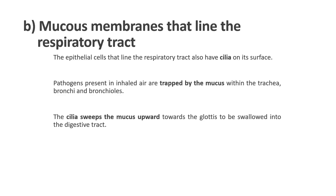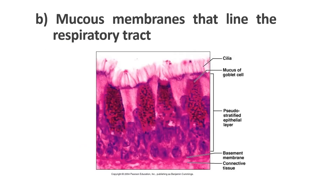The second example is the mucous membrane at the respiratory tract. The epithelial cells lining the respiratory tract also have cilia on their surface. Once a pathogen invades that area, the pathogen in the inhaled air will be trapped by mucus within the trachea, bronchi, and bronchioles. The cilia then sweep the mucus upward towards the pharynx to be swallowed into the digestive tract. This diagram shows the cilia structure on the surface of the epithelial cells at the respiratory tract, along with the goblet cells which produce the mucus.